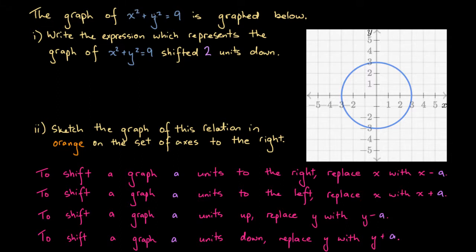The graph of x squared plus y squared equals 9 is graphed below. We're asked two questions here. The first one is write the expression which represents the graph of x squared plus y squared equals 9 shifted 2 units down. And then we're asked to sketch the graph of this relation in orange on the set of axes to the right.